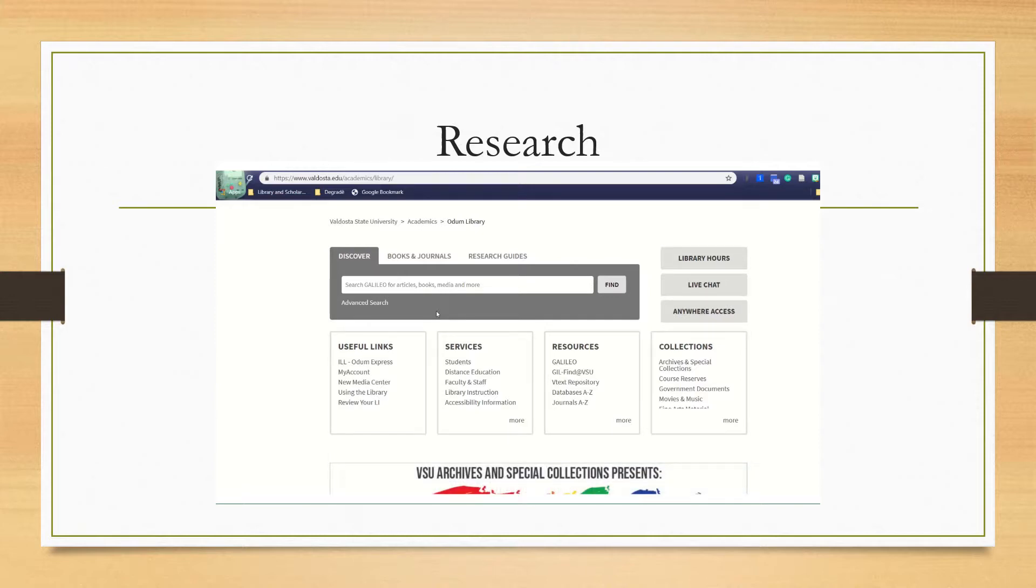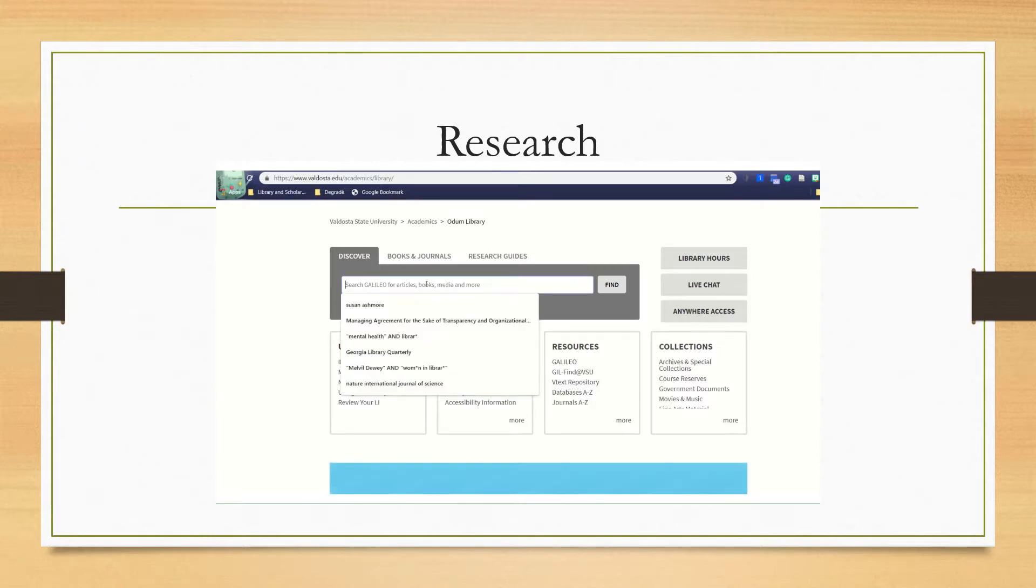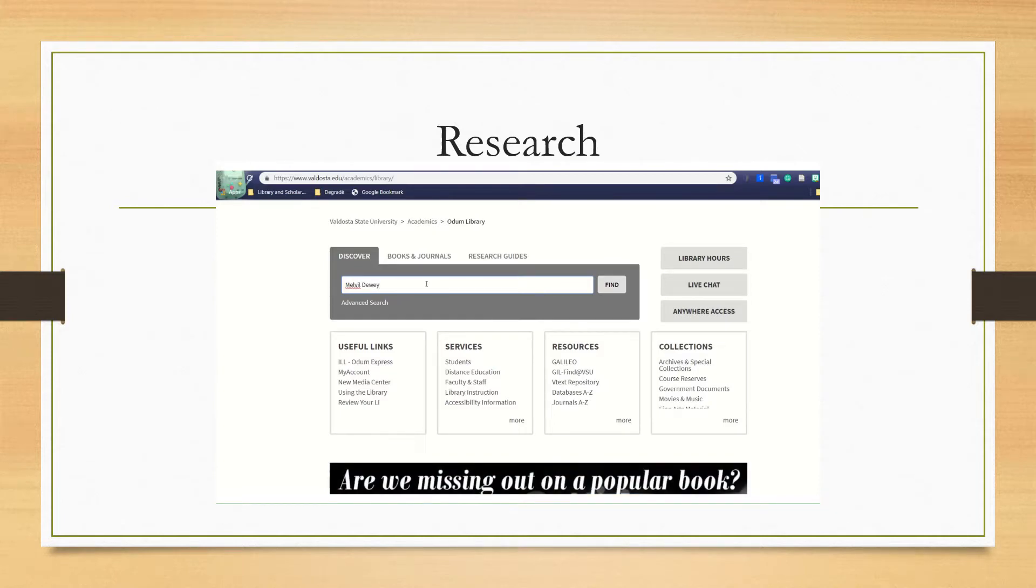We can begin by creating some search terms. We know that we want to see how Melville Dewey impacted women in librarianship, so we can start with his name and the phrase women in librarianship. Okay, so I'll type that into the search box. Good. Now, before we hit search, let's incorporate Boolean operators into our search terms. Could you type and between the two phrases?